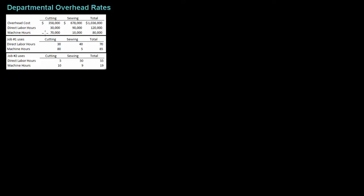Just like a plant-wide overhead rate, a departmental overhead rate is calculated based on estimated numbers at the beginning of the year. In the information we have here, I have two different departments: the cutting department and the sewing department. The total cost for both departments is $1,036,000, and both departments use direct labor hours and machine hours. To calculate a predetermined overhead rate, that equals estimated overhead divided by estimated activity. I have two different activities here — direct labor hours or machine hours — so let's calculate both to see what the rates would look like.